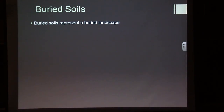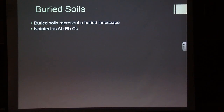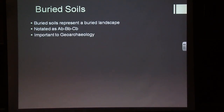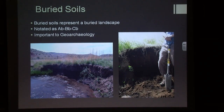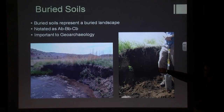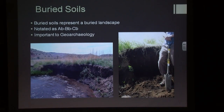Buried soils represent a buried landscape — soils are land surfaces, and a buried soil is just a covered land surface. They're notated with a small letter 'b' added to the horizon name indicating buried. This picture shows a buried soil in the field before and after we've cleaned it out. You can really see the buried A horizon — you can tell by the change in darkness, which indicates that change in organic matter. That's really what we're looking for when we find these in the field.